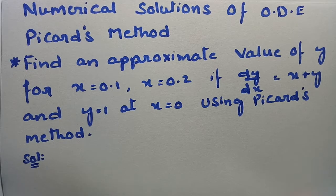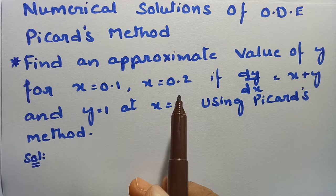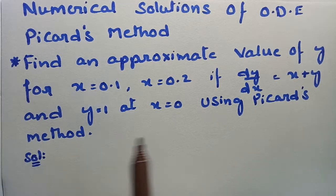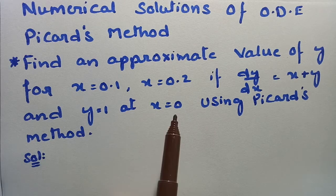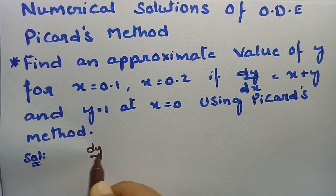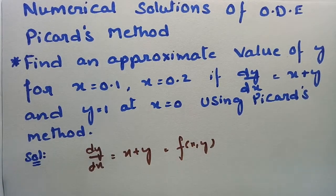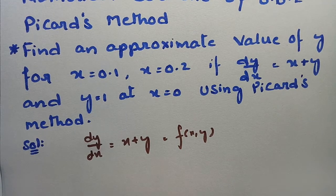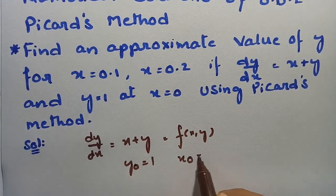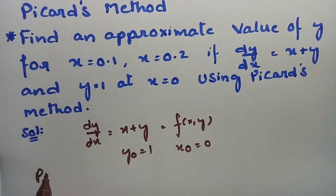We have to find an approximate value of y for x = 0.1 and x = 0.2, if dy/dx is given as x + y and y = 1 at x = 0, using Picard's method. So it is given that dy/dx = x + y. We have to assume that it is a function f(x, y). It is given that y₀ = 1 and x₀ = 0.